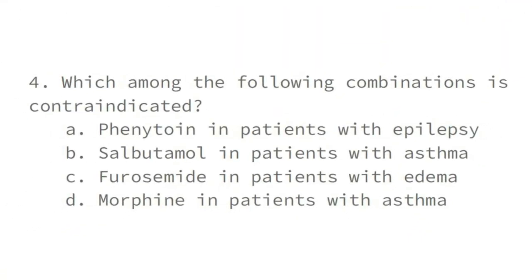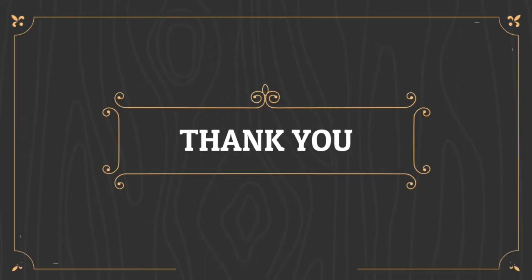The last MCQ: which among the following combinations is contraindicated? Phenytoin in patients with epilepsy is not contraindicated — phenytoin is an anticonvulsant. Salbutamol in patients with asthma is not contraindicated — it is used to treat asthma. Furosemide in patients with edema is not contraindicated — it is used to treat edema. Morphine in patients with asthma is the correct answer, as we discussed when covering therapeutic incompatibility. This ends our presentation. We hope you understood the concept of chemical and therapeutic incompatibilities. Thank you for your time and for listening.